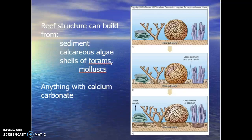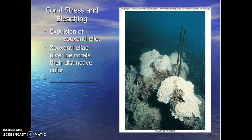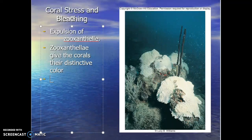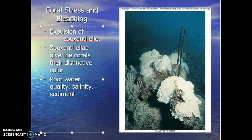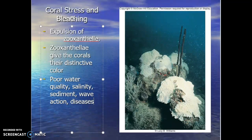We talked about the ideal conditions for coral reefs — salinity, lack of pollution, light penetration, etc. When corals get stressed, they go into bleaching, which is the expulsion of the zooxanthellae — the algae that gives corals their distinctive color. Any of those variables can contribute to stress and bleaching: poor water quality, pollution, salinity, sediment, too much wave action, diseases, and so on. All these things can ultimately be detrimental to the health of the reef itself.